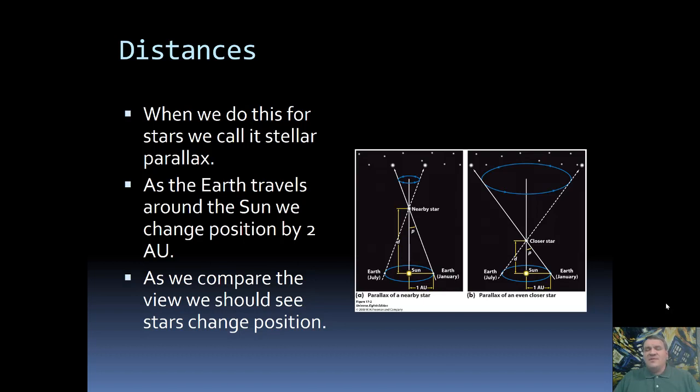Well we can use the motion of the earth to help us figure this out. So we take a picture at one time of year, we take a picture 12 months later, then we take half of the angle that the star has moved and that is our parallax angle.